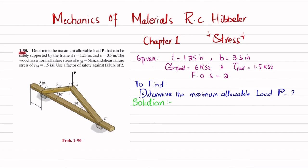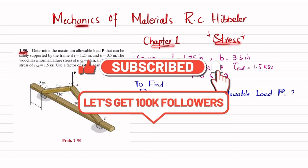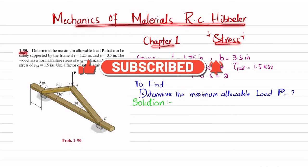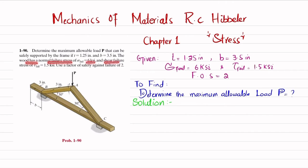Welcome back. Problem 1-90 is taken from Chapter 1, Stress, in Mechanics of Materials by R.C. Hibbeler. The statement is: determine the maximum allowable load P that can be safely supported by the frame if t is 1.25 inch, b is 3.5 inch, the wood has a normal failure stress of 6 ksi, and a shear failure stress of 1.5 ksi. Use a factor of safety against failure of 2.